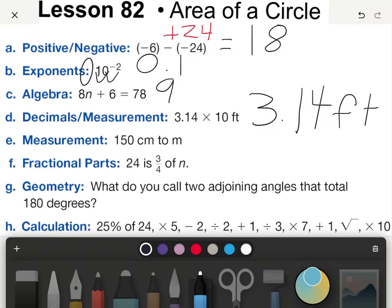For measurement, metric conversions so elegant and simple. In this case, 100 centimeters to a meter, so this would be 1.5 meters, also known as one and a half meters. 24 is three fourths of n, so about one third of that would be 8, times 4 would be 32.